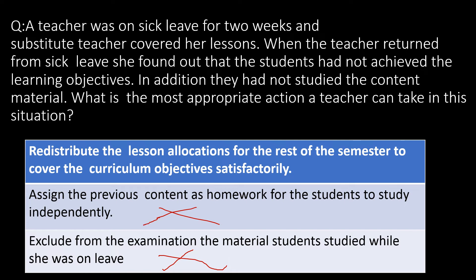A sensible, responsible teacher is going to redistribute the lesson allocations for the rest of the semester to cover the curriculum objectives satisfactorily. She can have extra classes and cover the portion that was missed. This is what a responsible teacher has to do — this is your right option. My tip: remove the negative practices, because we don't encourage negative practices in our teaching profession. Look for the most positive and fruitful options that benefit the student — those will be your right answers.